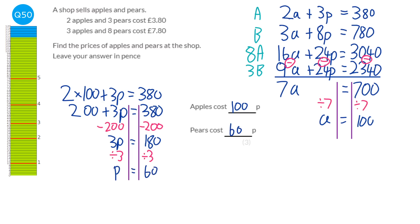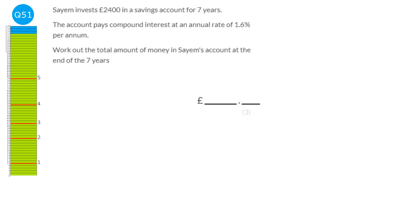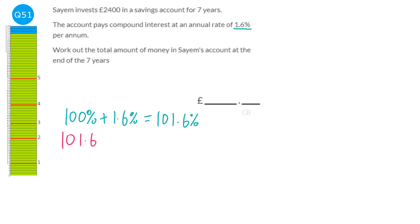For compound interest, work out the multiplier first. Starting from 100, adding 1.6% gives 101.6%. As a decimal (dividing by 100), the multiplier is 1.016. Each time you want to increase something by 1.6% compound interest, you multiply by 1.016.